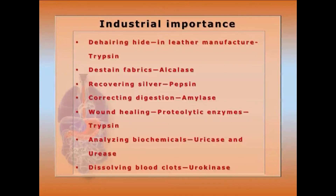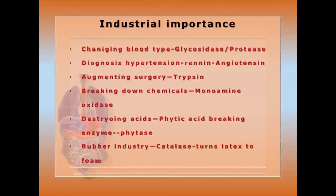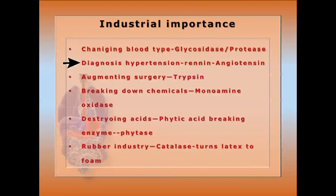Further applications: recovering silver uses pepsin; correcting digestion uses amylase; wound healing uses trypsin; biochemical analysis uses urokinase and urease; dissolving blood clots for heart patients uses urokinase; changing blood type uses glycosidase and protease; diagnosing hypertension involves the renin-angiotensin system; augmenting surgery uses trypsin; neurodegeneration treatment uses monoamine oxidase (MAO); destroying phytic acid for plant metabolism uses phytase; and the rubber industry also requires catalysis.